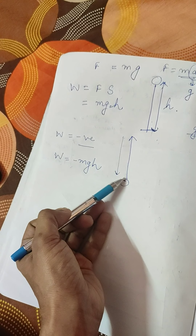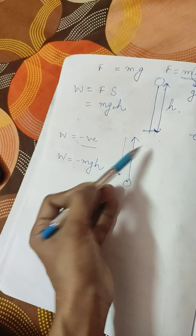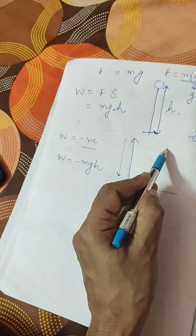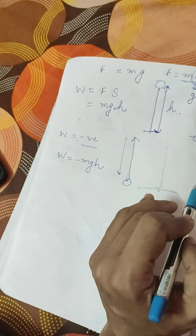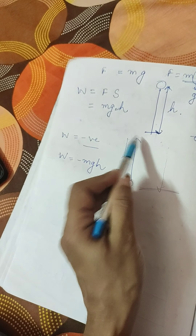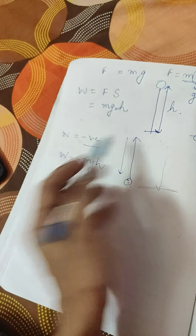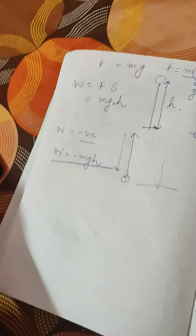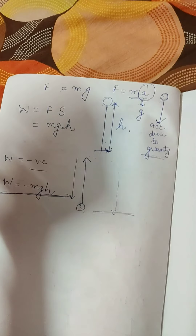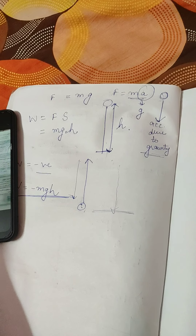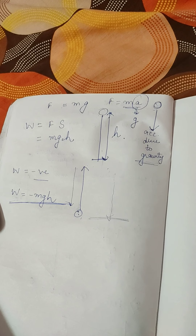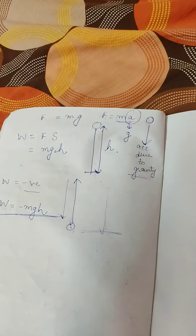When you throw a body upwards, the force of gravity pulls it downwards. So you are doing work against the force of gravity, making the work done negative. It is negative because the angle between displacement S and force F is 180 degrees. This is all about the work done by the force of gravity.